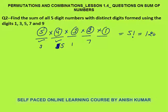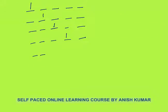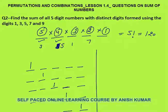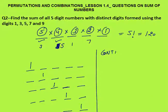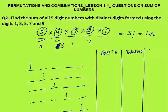We need to find the sum of all 120 numbers using the same concept — contribution of each digit. For digit 1: when 1 is at the ten-thousands place, its contribution is 10^4. The remaining 4 places are filled by 4 remaining digits in 4×3×2×1 = 24 ways. So 24 numbers will be there, each contributing 10^4.